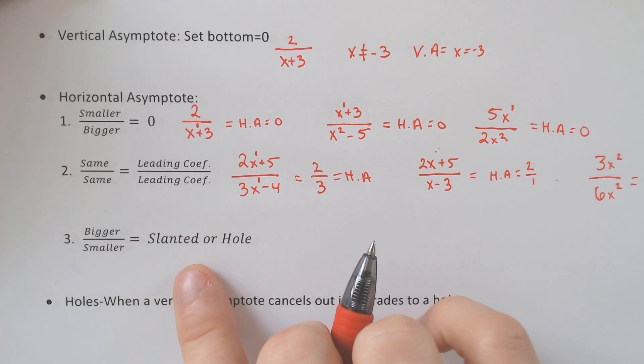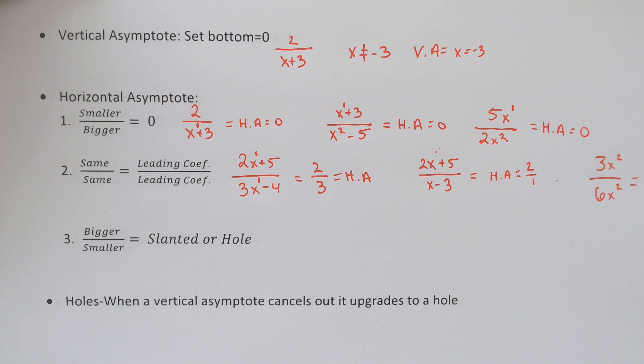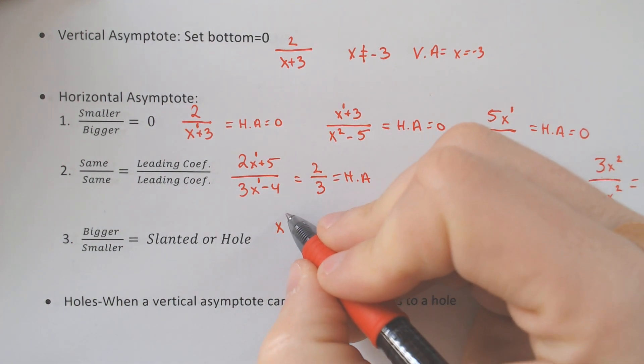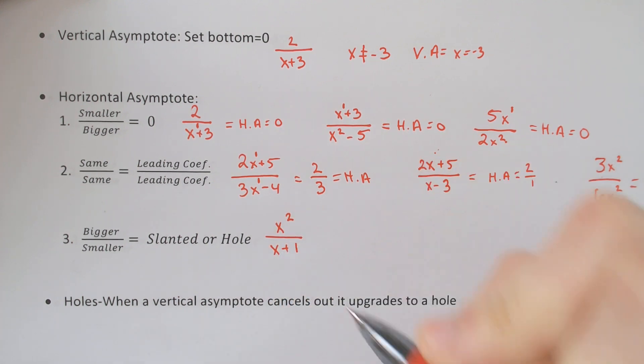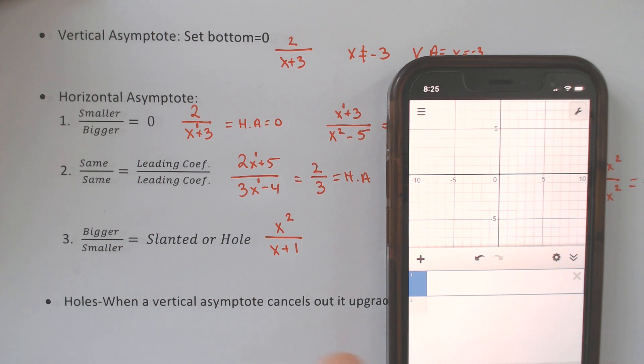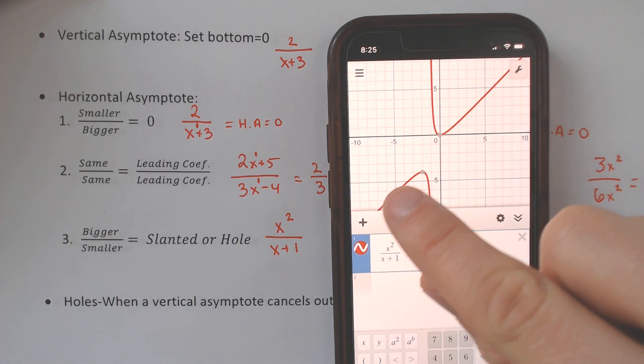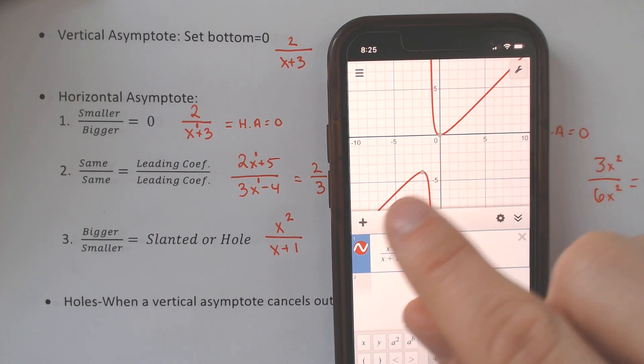Last one, this one is more obscure. If you have a bigger over a smaller exponent, for instance, if we had x squared over x plus 1, that will produce something unique. It will produce a slanted asymptote or a hole, and I'm going to go over holes in a second. So if I had x squared divided by x plus 1, see how this horizontal asymptote is no longer horizontal, it's actually slanted, or you could also call it oblique?